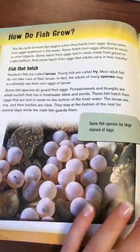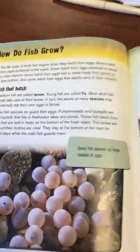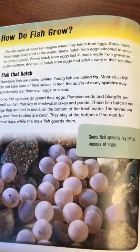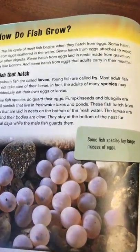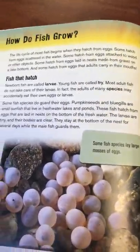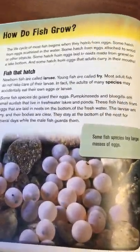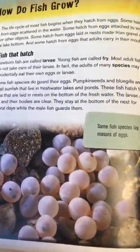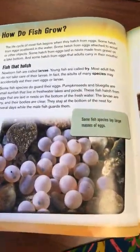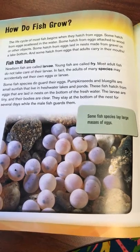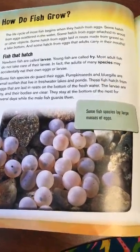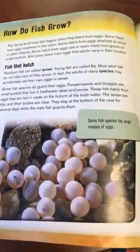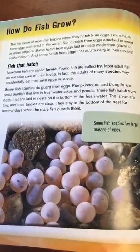The life cycle of fish begins when they hatch from eggs. Some hatch from eggs scattered in the water. Some hatch from eggs attached to wood or other objects. Some hatch from eggs laid in nests made on gravel on a lake bottom. And some hatch from eggs that adults carry in their mouths.